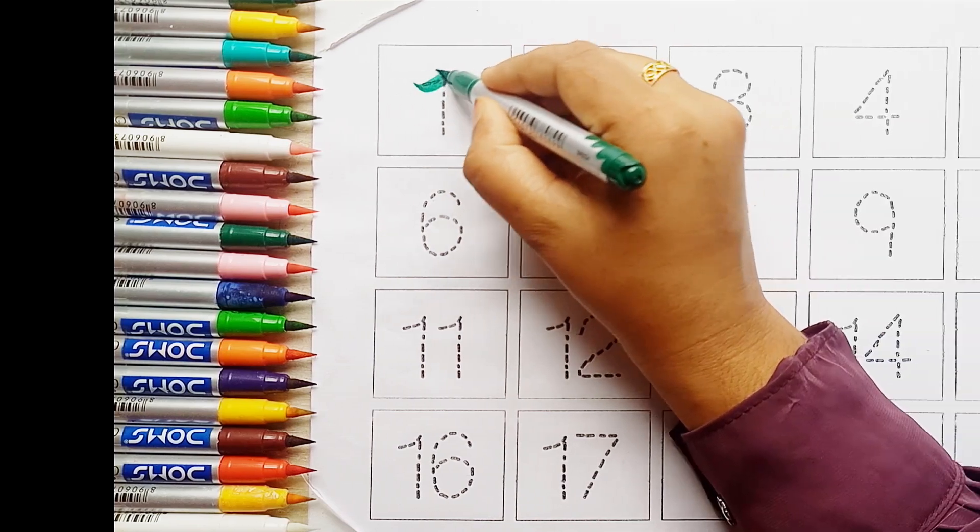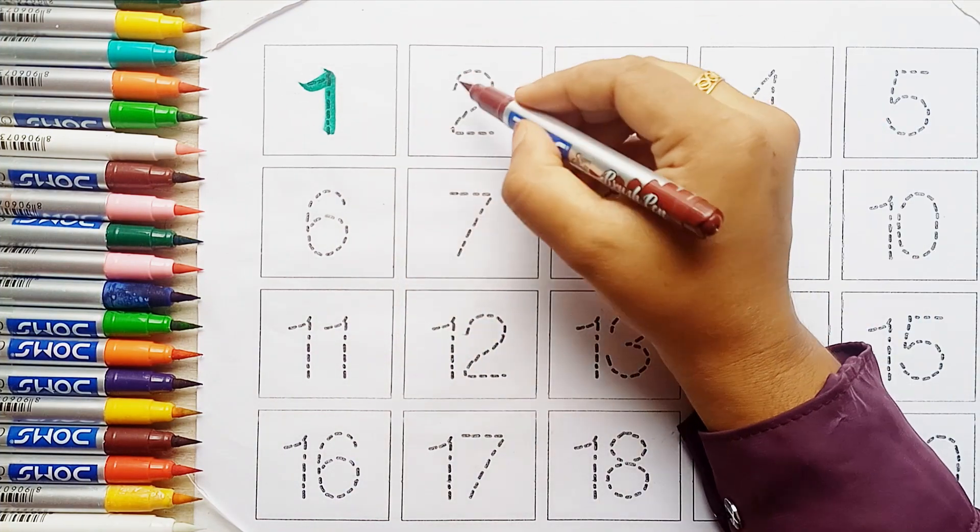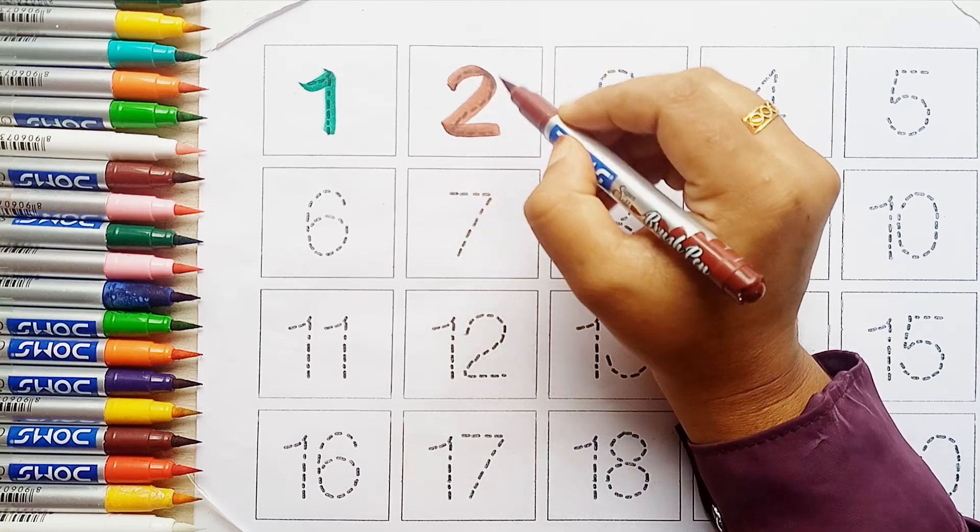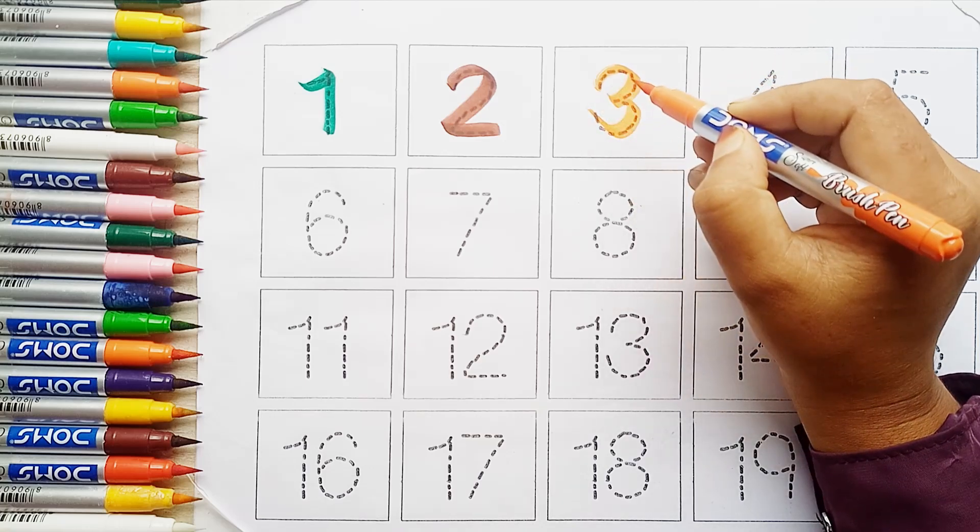Let's start. Green color, one, brown color, two, orange color, three.